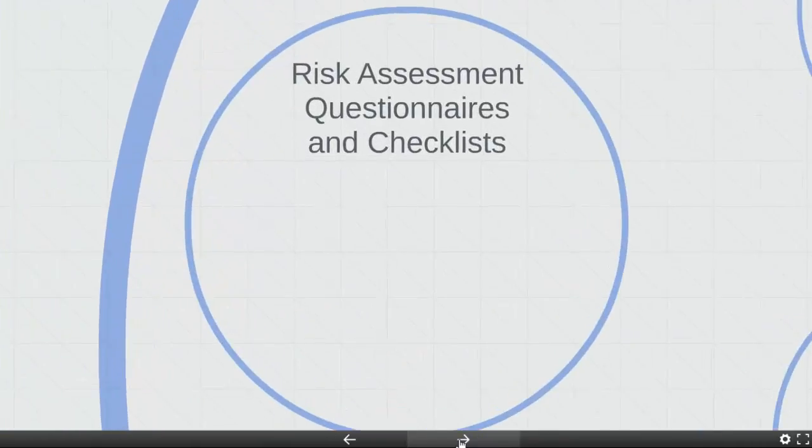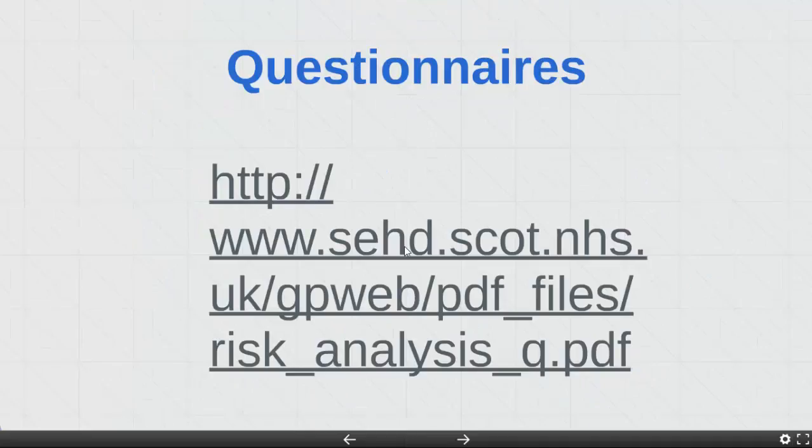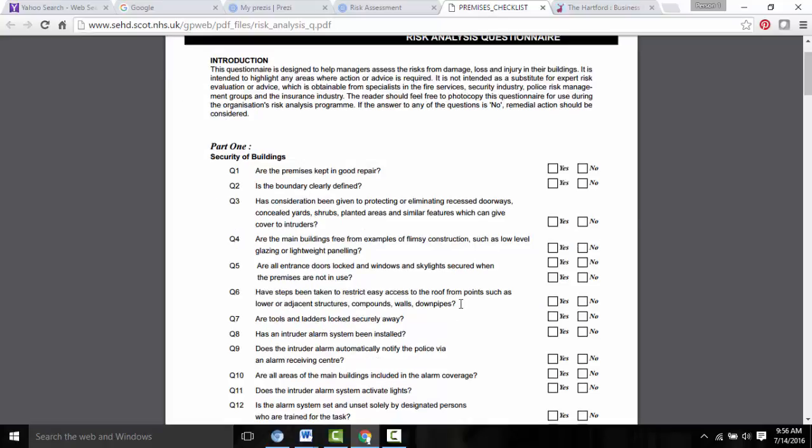So let's look at risk assessment questionnaires and checklists. Questionnaires ask questions of the business owner or risk manager, and often these are open-ended questions which can lead to a thorough and detailed investigation of the organization. Whereas insurance checklists require you to simply check off various items, and they tend to focus on insurable risks. Let's go to a website that contains a PDF of an old risk analysis questionnaire. This is from 1998, but it actually has some really good examples of the types of questions that might be asked.